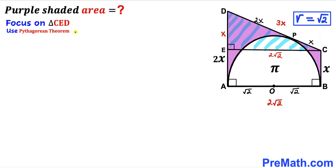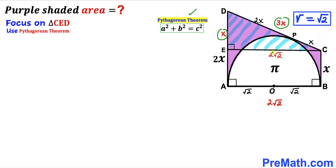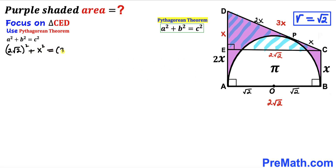Since the whole length AD = 2x and EA = x, the remaining segment DE = x. Now let's focus on right triangle CED and apply the Pythagorean theorem. The hypotenuse is CD = 3x, and the two legs are DE = x and EC = 2√2.